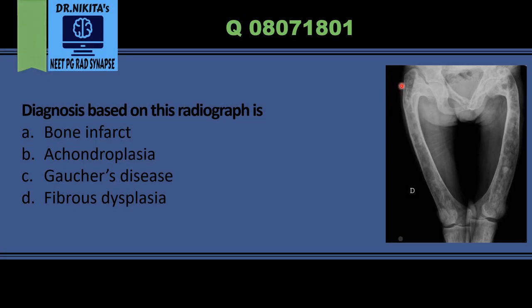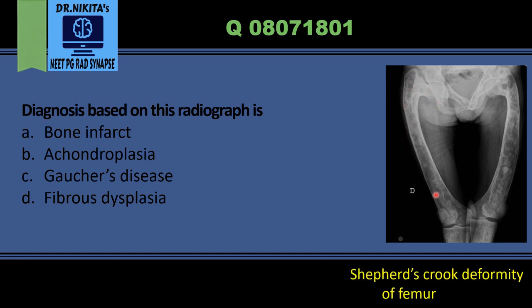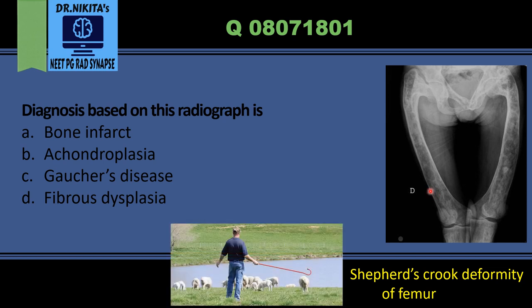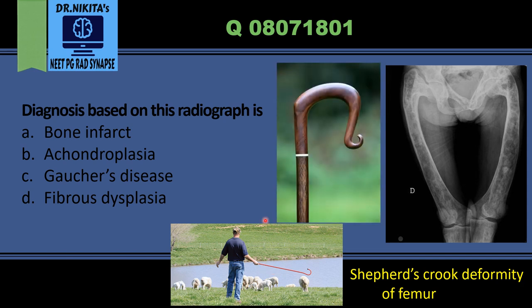Here we have a radiograph where we see this deformity of the proximal femur which is called Shepherd's Crook deformity. This is a Shepherd's Crook — the stick which is taken by the shepherd. The shape of the proximal femur here is like this Shepherd's Crook; that is, there is a coxa vara deformity.